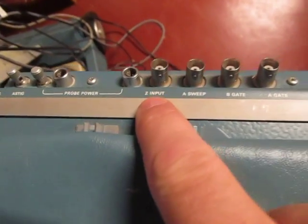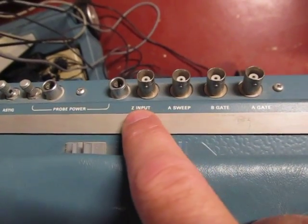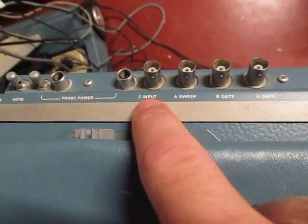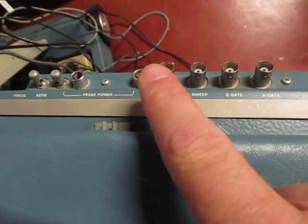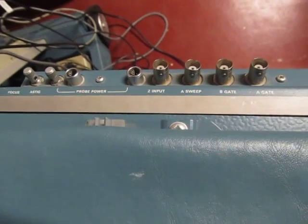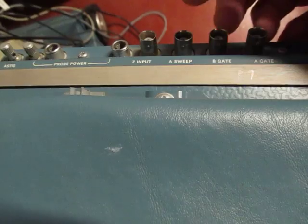There's a Z-axis input - that's actually an input, not an output. Putting a signal in there will cause the trace to intensify or dim. It can be useful for some applications, particularly some XY applications. We're not going to go into that one too much today.